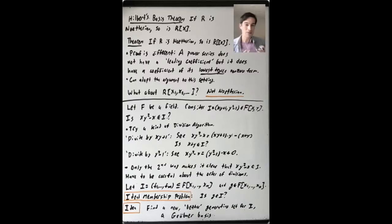So what does this problem look like in general? Is you have some ideal I generated by F1 up through Fm in a polynomial ring in n variables. Let's say n is at least two, because otherwise this is not so interesting.